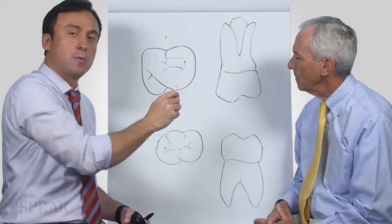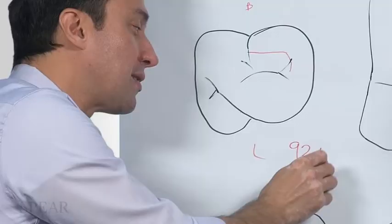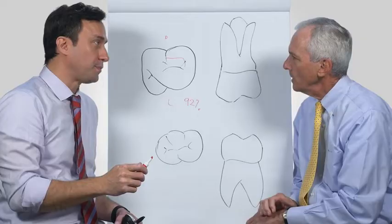Previously, textbooks would show you these teeth have three canals, and then there might be a fourth one called the MB2. But histological studies have now shown that 92% of the time, the MB2 is present histologically. I find it 100% of the time.